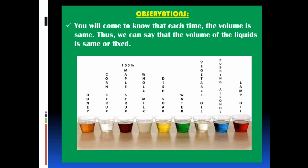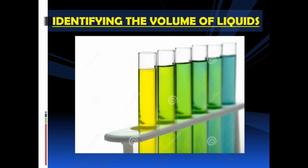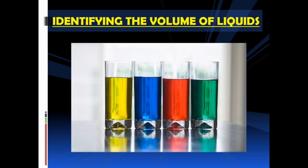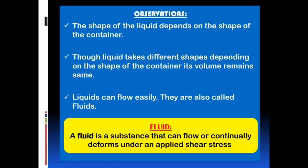You can see in the picture — different liquids of the same quantity in the same containers are all occupying the same volume. From these pictures, we can understand that the volumes of liquids are fixed. The overall observations from parts 1 and 2 of Activity 1: the shape of the liquid depends on the shape of the container; though liquid takes different shapes, its volume remains the same. Liquids can flow easily and are also called fluids. A fluid is a substance that can flow or continually deforms under an applied shear stress.